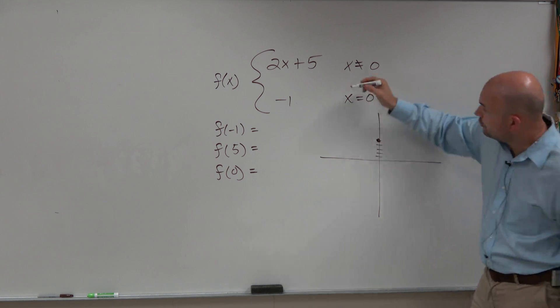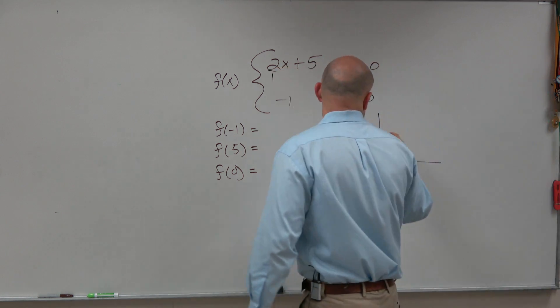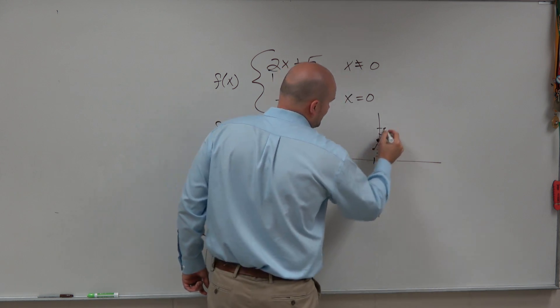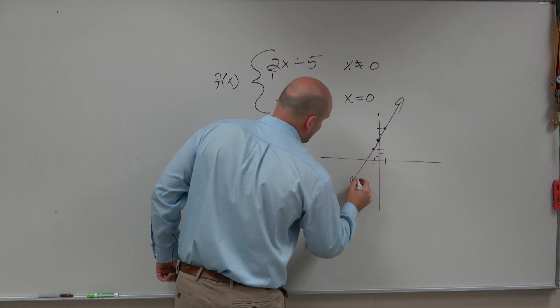The slope is 2 over 1. So you can go up 2 over 1, or you could go down 2 to the left one. And either way, you see there's a graph that kind of looks something like that.